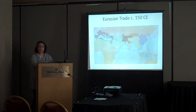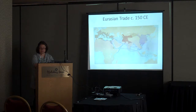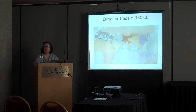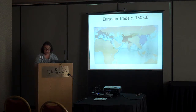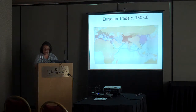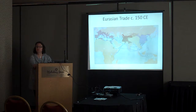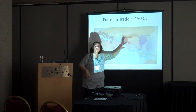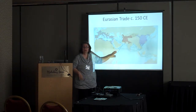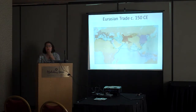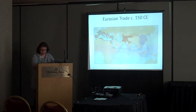Wallerstein concedes that pre-modern world economies existed, but argues that they transformed into world empires — he uses Rome as an example. The pre-modern world empires at times took on aspects of world systems, but according to Wallerstein, world empires either disintegrated or were eventually subsumed into the modern world system. If you follow Wallerstein's reasoning, this area — which obviously has no central imperial core and which I identify as a world economy — would have collapsed into a world empire, but it did not.